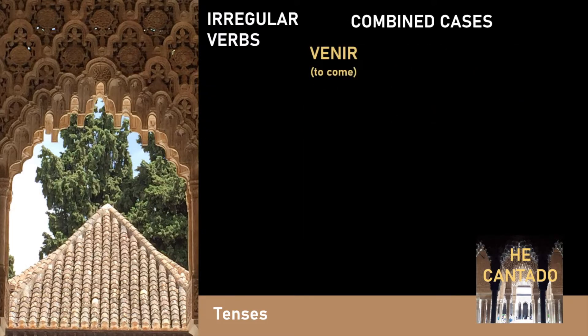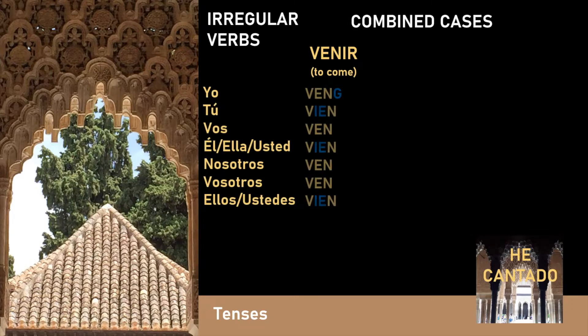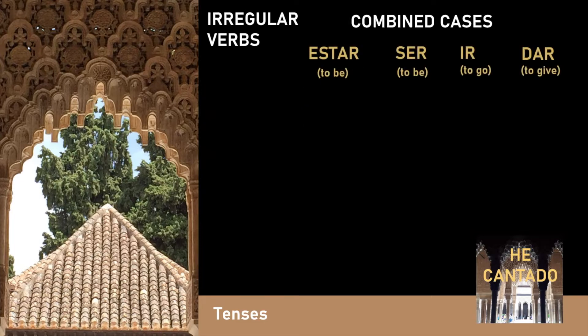The verb venir, similar to the verb tener, is conjugated as: yo vengo, tú vienes, vos venís, él/ella/usted viene, nosotros venimos, vosotros venís, ellos/ustedes vienen.